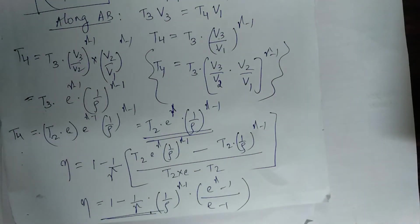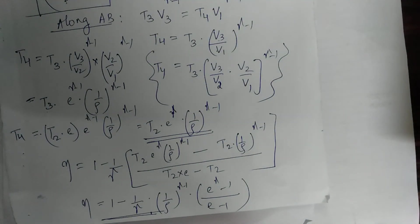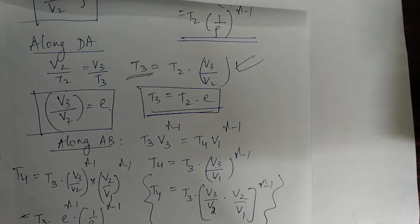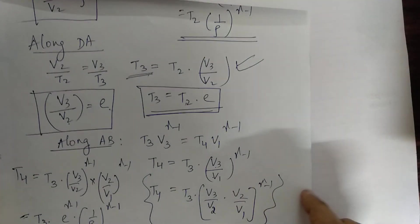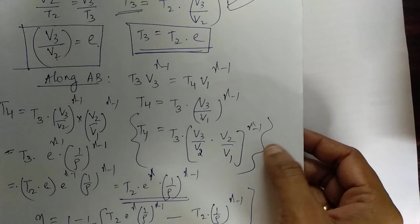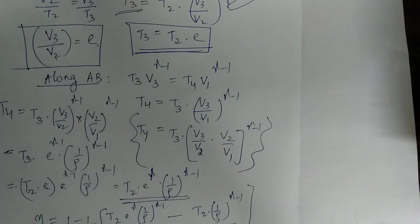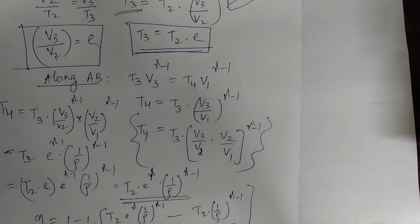For the same compression ratio, the efficiency of the petrol engine is higher than that of the diesel engine. However, since the compression ratio of the diesel engine is much higher than that of the petrol engine, the overall efficiency of the diesel engine is higher than that of the petrol engine.